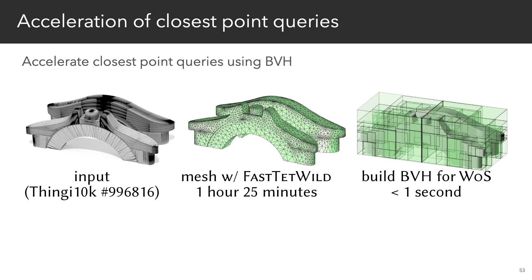Closest point queries can be accelerated via standard spatial hierarchies such as a BVH for a wide variety of scene representations. Unlike mesh generation, a BVH uses little memory and can be built quickly even for detailed models.